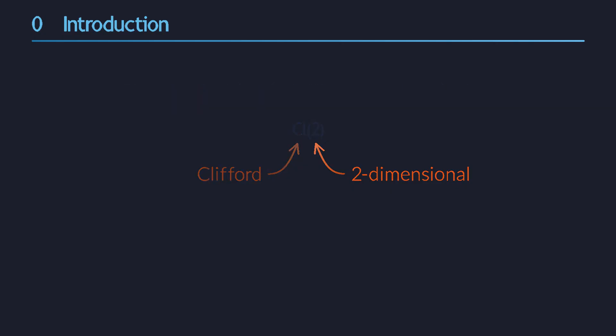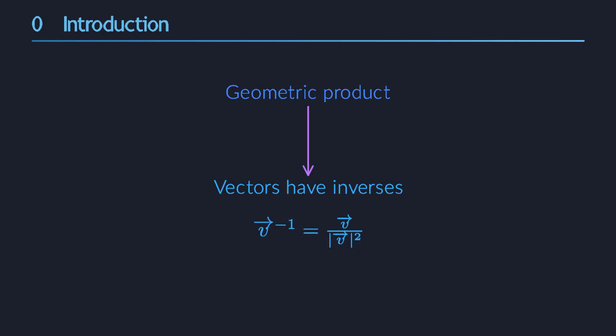But first, a quick recap. This video is part of a longer series on geometric algebra. So far we have defined a new product called the geometric product. We specifically want to use it to calculate inverse vectors. From the required properties of this new product, we derived a formula that consists of two parts. The product of two vectors is their dot product plus their wedge product, which means it's a real number plus a bivector.